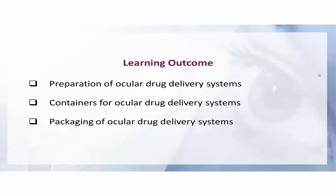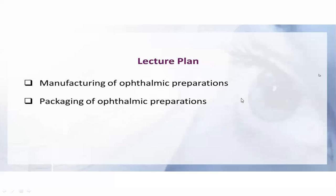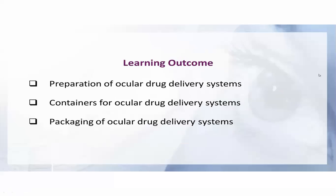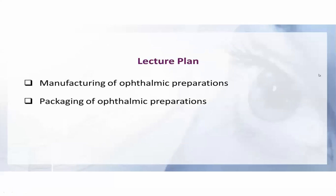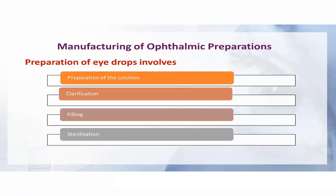We are studying the ocular drug delivery system in industrial pharmacy, specifically the process of preparation, container packaging, and manufacturing of ophthalmic dosage forms. Continuing from yesterday's talk, we saw how eye drops are formed and the different formulations used: eye drops, eye oils, implants, eye lotions, eye gels. The preparation of eye drops requires solution preparation, clarification, filling, and sterilization.